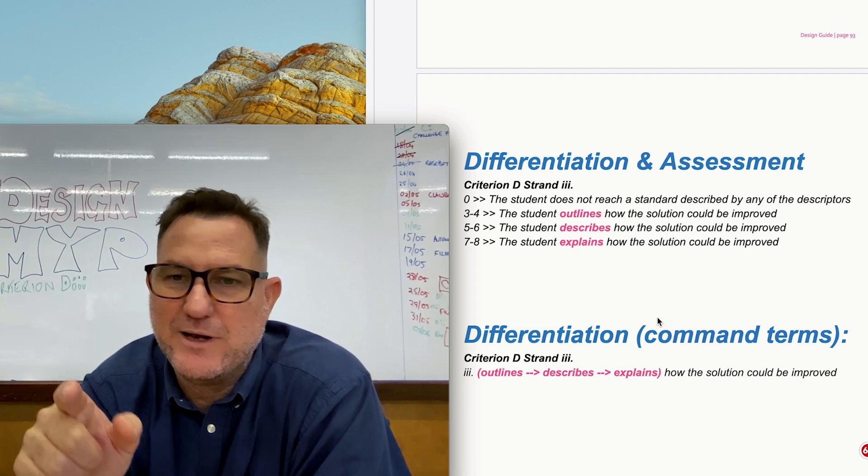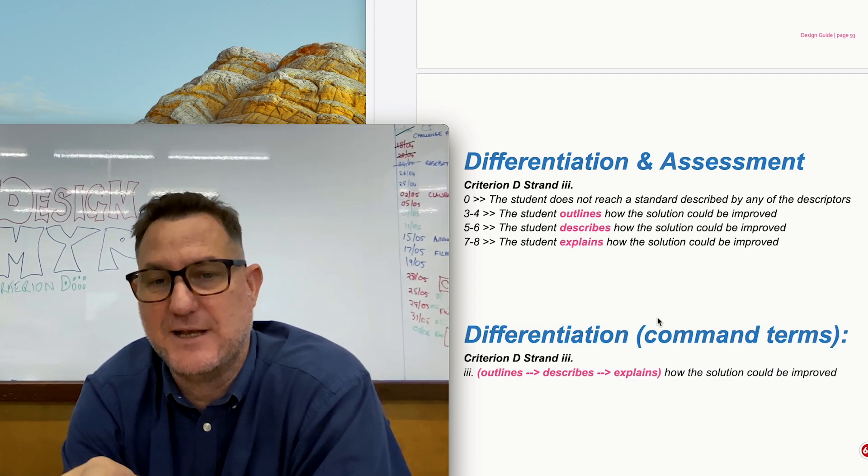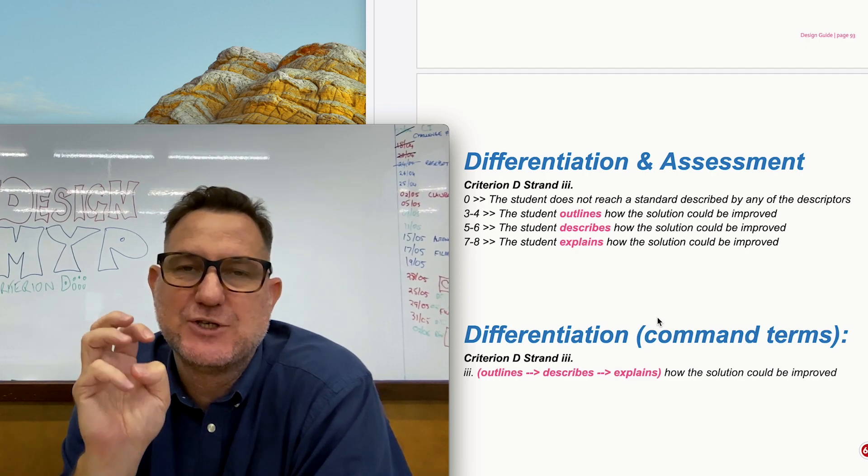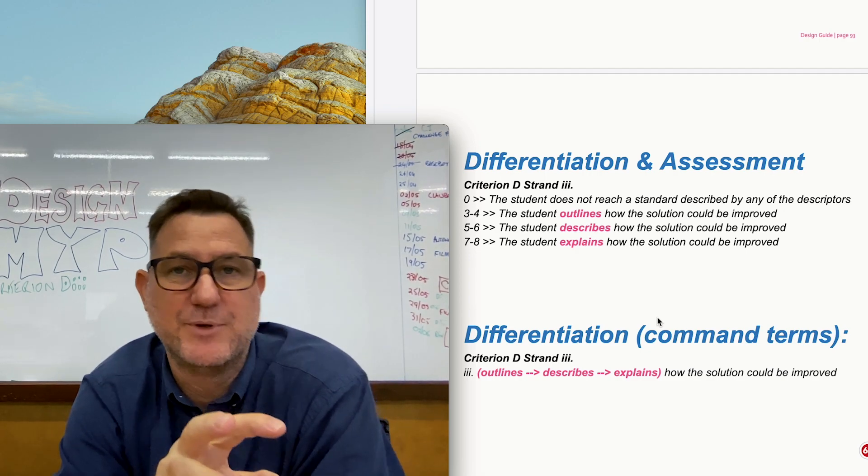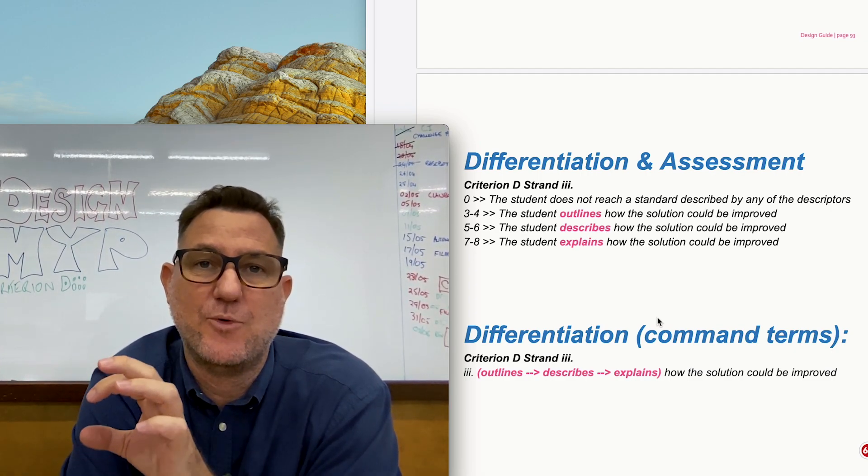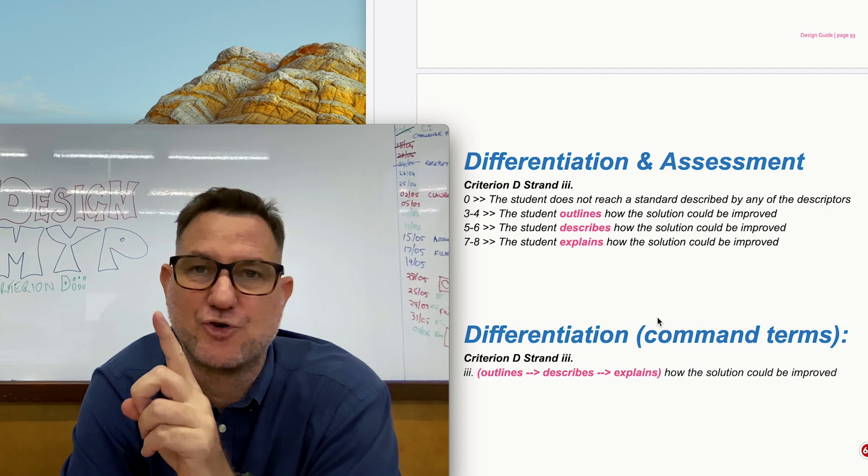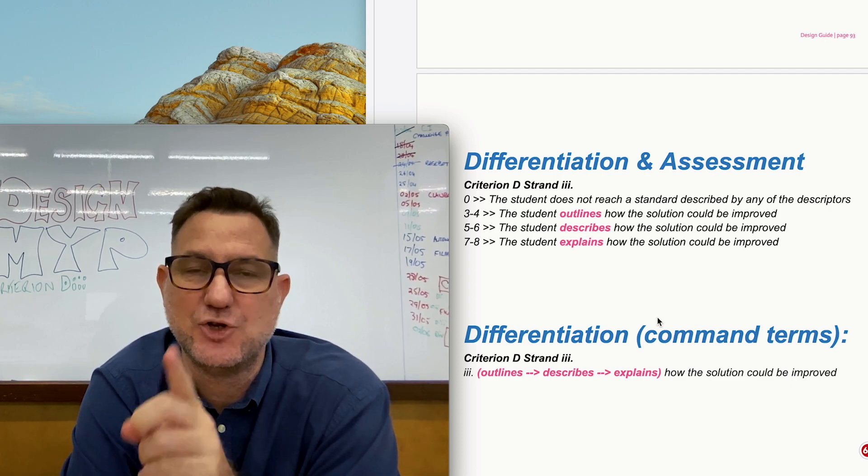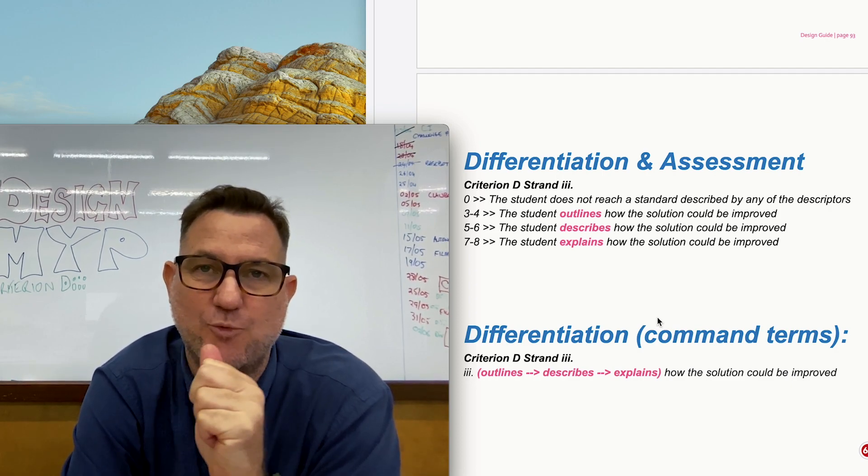Now one other thing too that I just noticed that I didn't have here in my document, you need to talk about changes to your product but you also need to talk about changes to your plan as well. So way back at the start of criterion C you would have created a plan, that's strand 1.